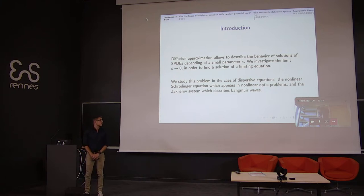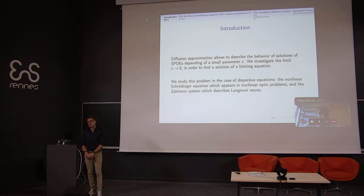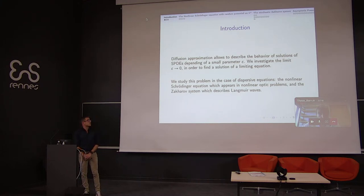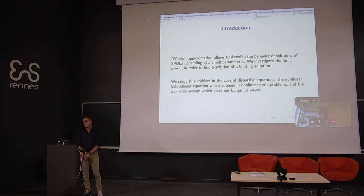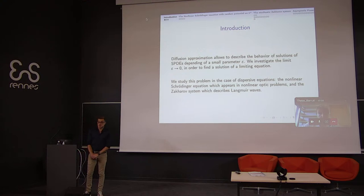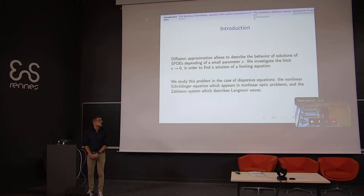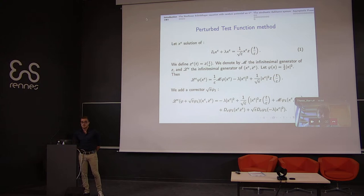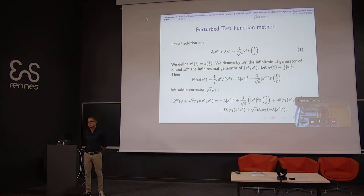We use this kind of approach for two problems. The first is the nonlinear Schrödinger equation, which appears for example in nonlinear optical problems such as the diffusion of light in an optic fiber. The second is the Zakharov system, which describes rapid oscillations of electron density in an ionized plasma. First of all, I will present the perturbed test function method, because it is a crucial tool for the study of our problems.